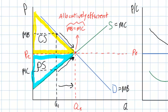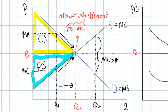What would happen if production occurred beyond QE? At Q2, the cost to producers is greater than the benefit enjoyed by consumers — this level of output is allocatively inefficient because marginal cost exceeds marginal benefit. Society has overproduced at Q2 and underproduced at Q1. Only at QE is society efficiently producing this good — this is what we call the socially optimal quantity of output.